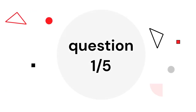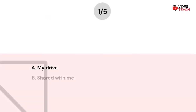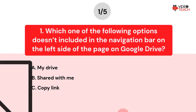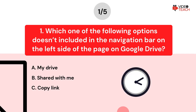Question number one. Which one of the following options doesn't include it in the navigation bar on the left side of the page on Google Drive? Option A: my drive. Option B: shared with me. Option C: copy link. Now you have about 15 seconds to think about your answer.